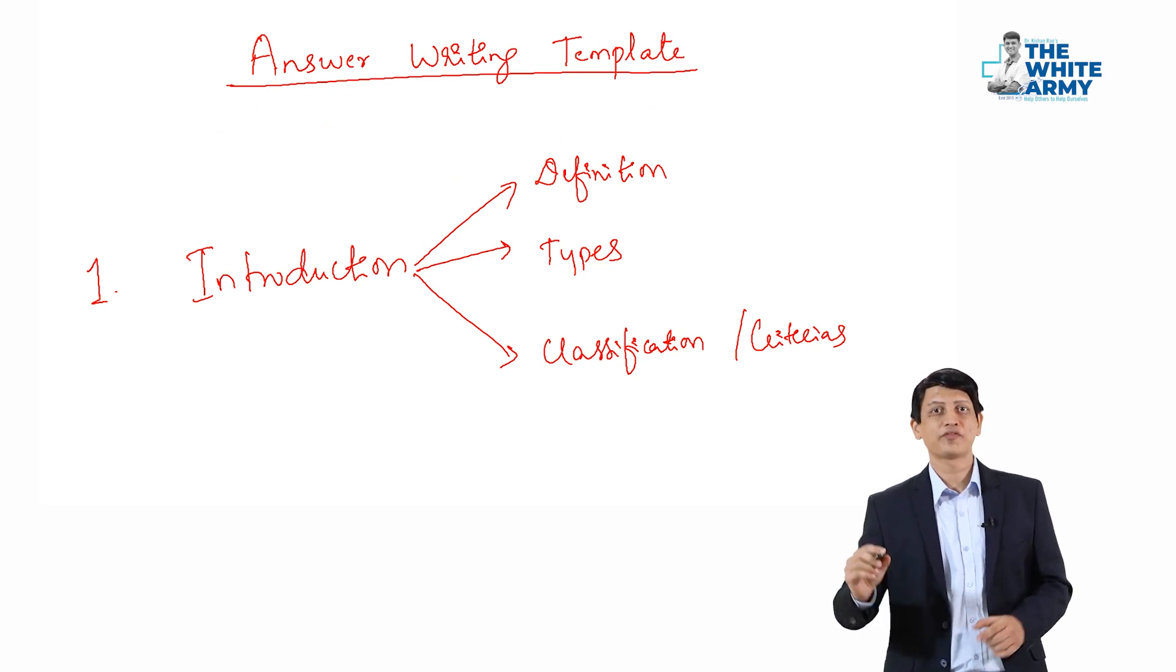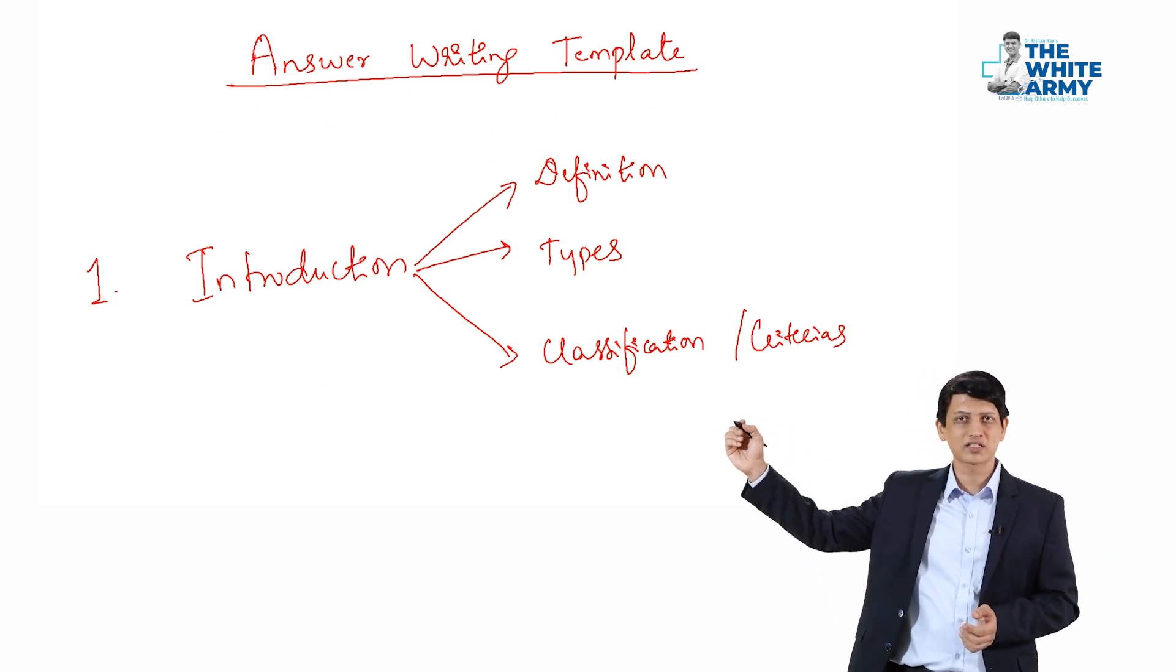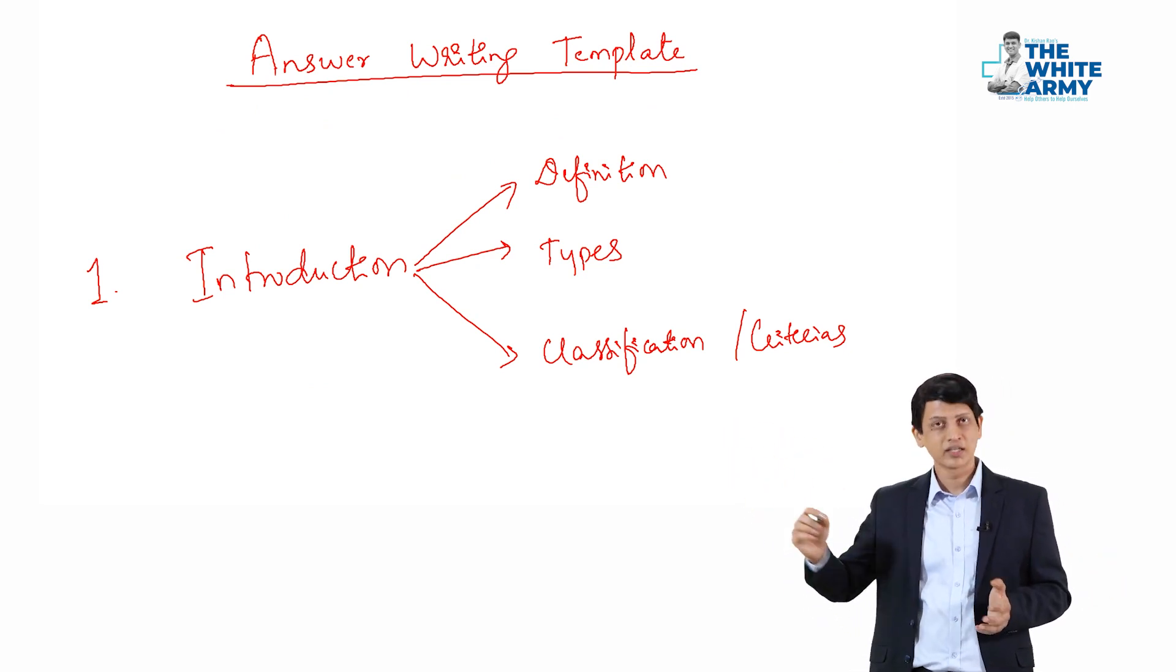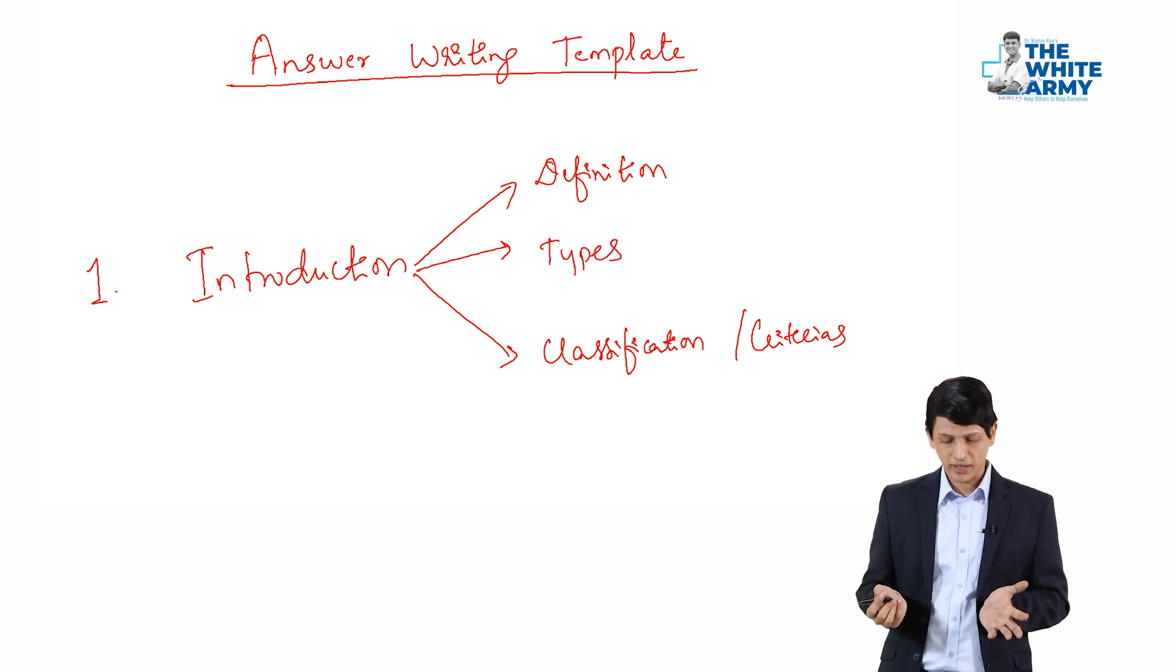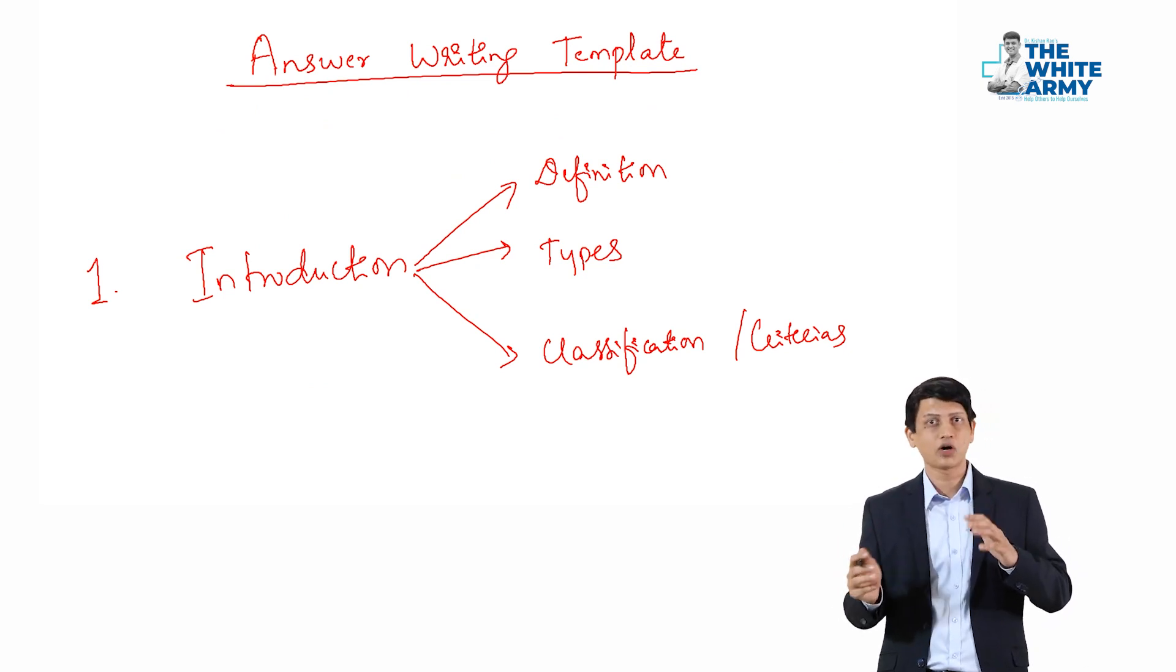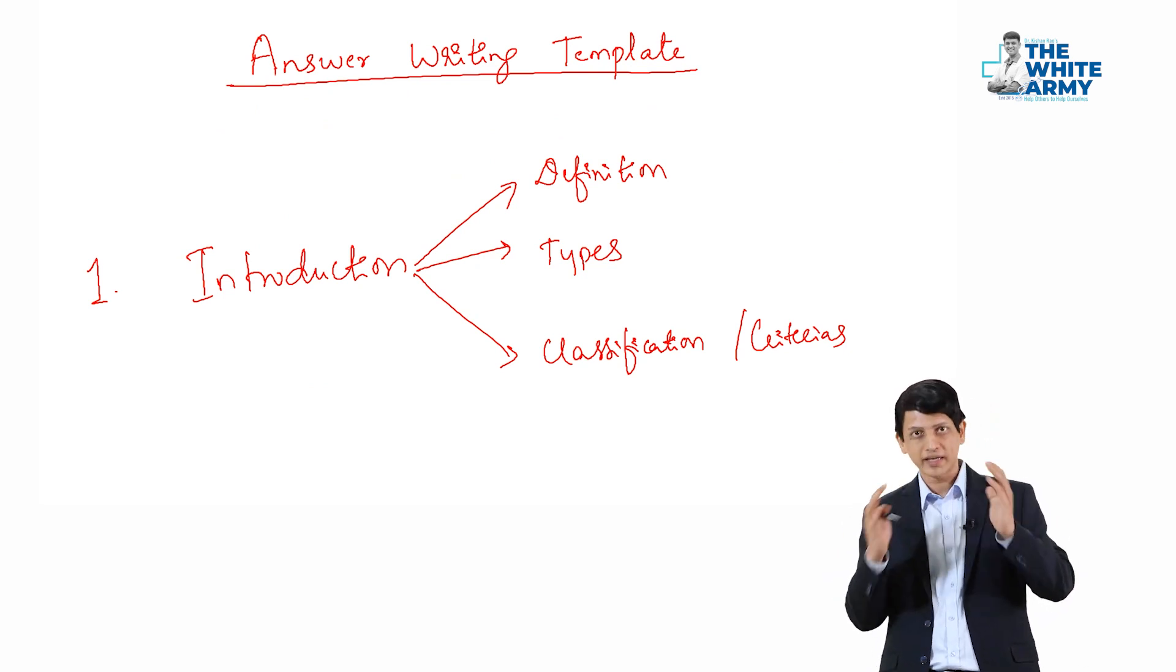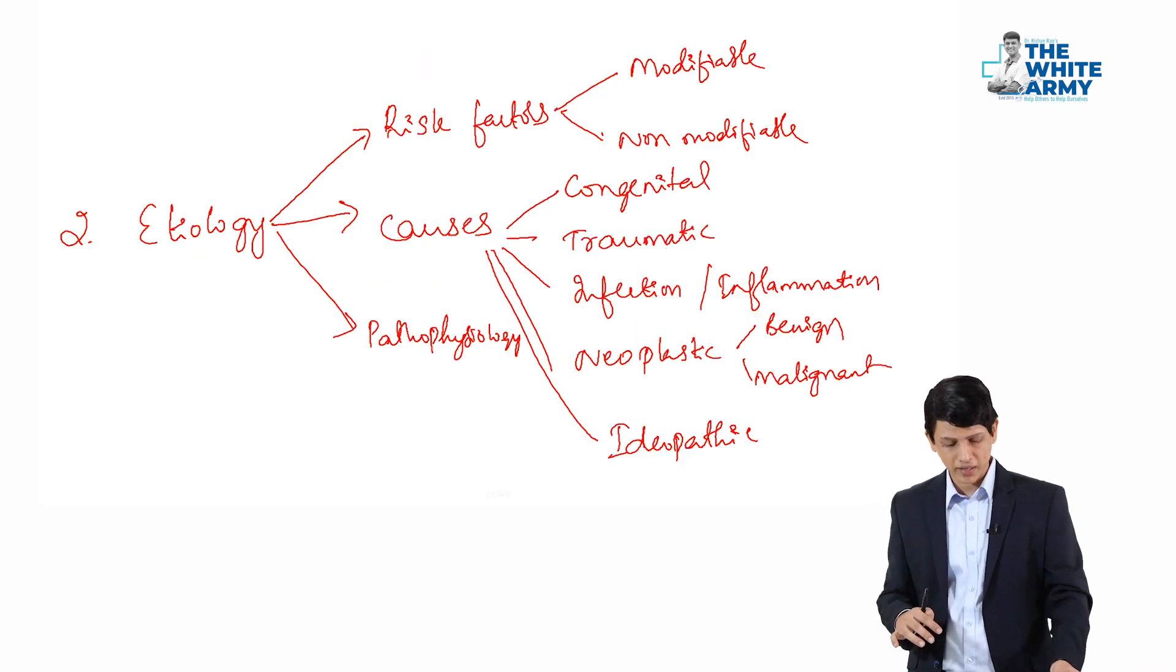For introduction, definition. Definition of hernia, you write in one or two lines. Whatever you know, write in one or two lines. Then the types of hernia. And if there is any classification of hernia or thyroid malignancies, you can write that as an introductory part.